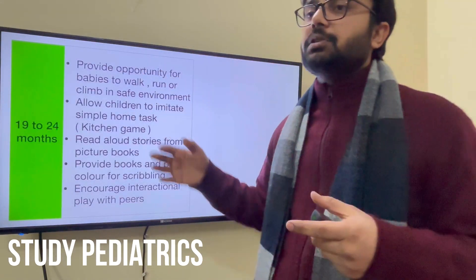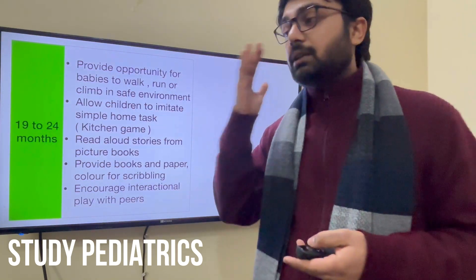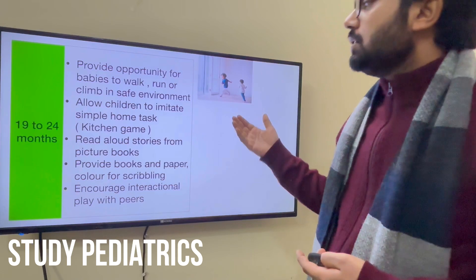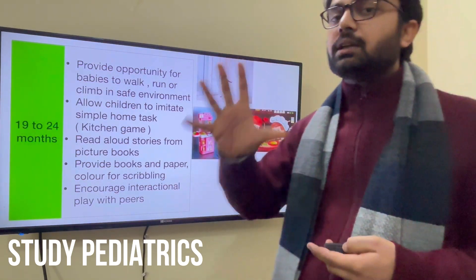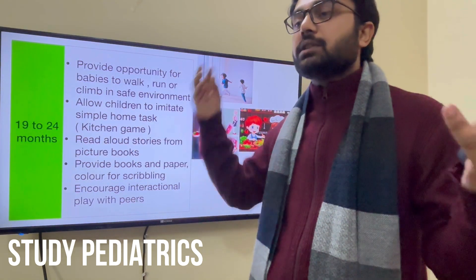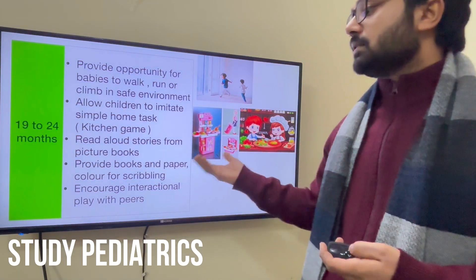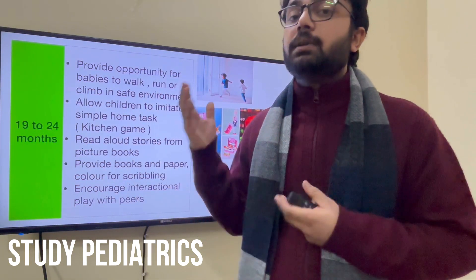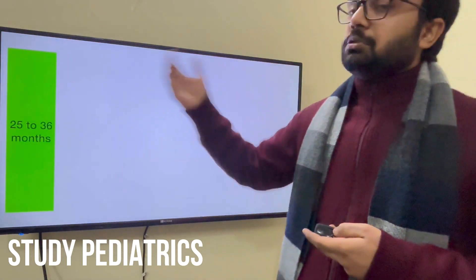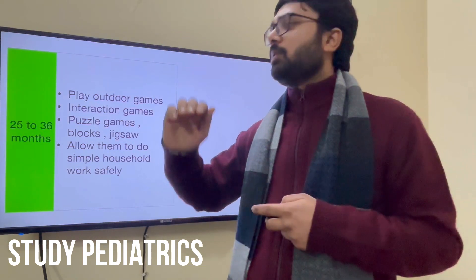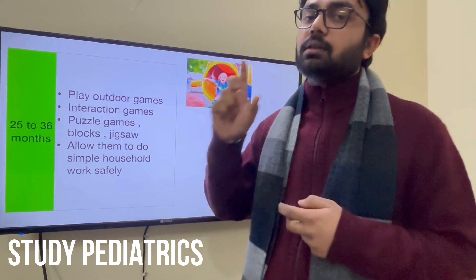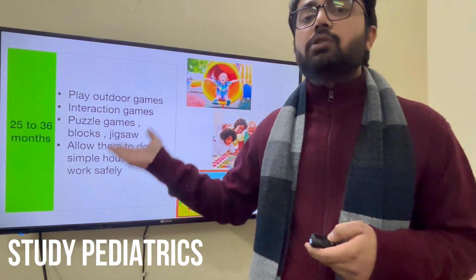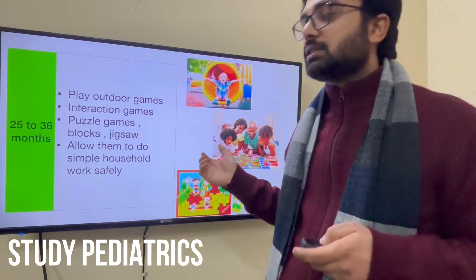For 19 to 24 months, provide opportunities for the baby to walk, run, or climb in a safe environment. Parents can buy small slides and games. Give them a kitchen set so the child can imitate home tasks. Read aloud stories so the child learns through both eyes and ears. Provide books and paper — let them scribble, tear, and have fun. Encourage interactive games. For 25 to 36 months (2 to 3 years), let the child play outdoors on slides under supervision. He can also solve puzzles like jigsaw puzzles. Allow them to do simple home activities like gardening or watering plants, but under strict supervision.